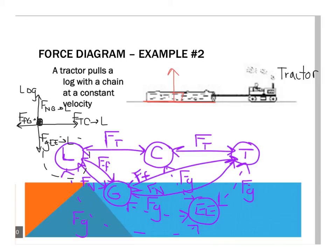The tractor is a little bit different than the log. The log is an inanimate object — it cannot move itself. The tractor, on the other hand, powers itself. Tractors, humans, cars, and animals all use the ground — they move forward by pushing the ground backwards. So for things that can move themselves, it's a different type of friction called rolling friction, or sometimes traction. The ground pushes you forward. So for the tractor's force diagram, we're going to show the force of friction pointed forward because it's rolling friction — the force of friction that the ground applies to the tractor.